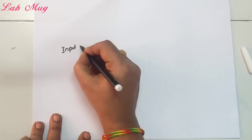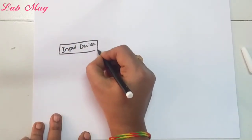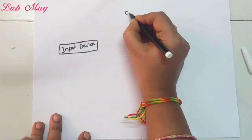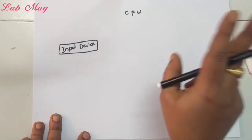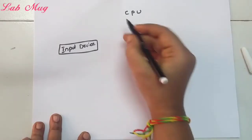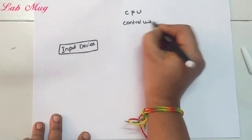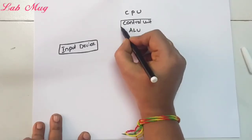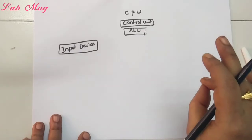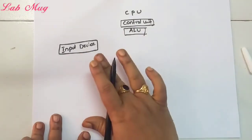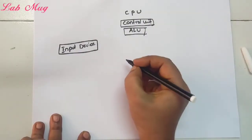The basic structure of the Von Neumann model consists of: control unit, arithmetic and logical unit, memory unit, registers, and input/output unit. The first part we look at is the input device — we always first take input from the input device — and the last one is the output device. Centrally, we have the central processing unit (CPU), which has two partitions: control unit and arithmetic and logical unit.